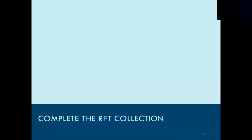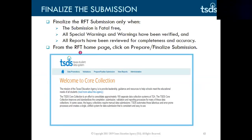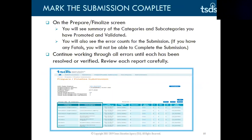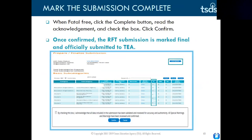Slides 62 through 65 explain how to complete the RFT collection. Before you finalize the submission, you will need to make sure that your data has been verified — address any fatal errors, verify special warnings and warnings, and review reports for completeness and accuracy. On the prepare finalize screen, you will see categories and subcategories you have promoted and validated along with error counts. When fatal-free, click the complete button, read the acknowledgement, check the box, and click confirm. Once confirmed, the RFT submission is marked final and officially submitted to TEA.